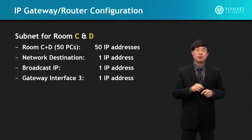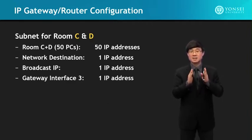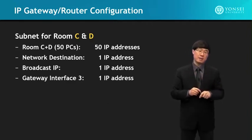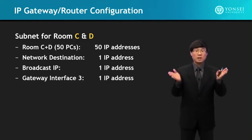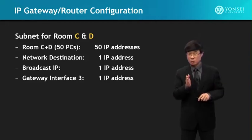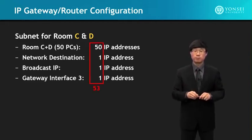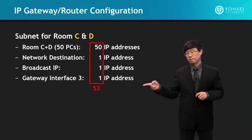Every communication interface needs a separate IP address assigned to it. So look at the router — all of the interfaces need individual IP addresses. And that's what we're preparing. Combining them all up together for rooms C and D, we get 53.